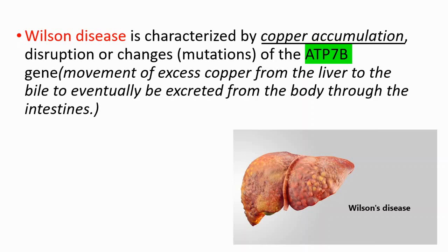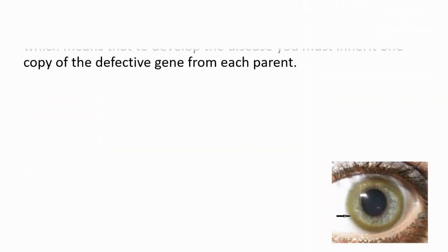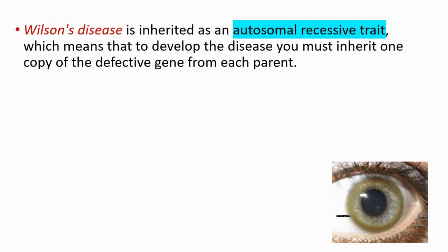As a result, we will see the symptoms. The symptoms are generally seen around 5 to 35 years of age. It's a rare genetic disorder inherited as an autosomal recessive trait, which means that to develop this disease, you must inherit one copy of the defective gene from each parent.